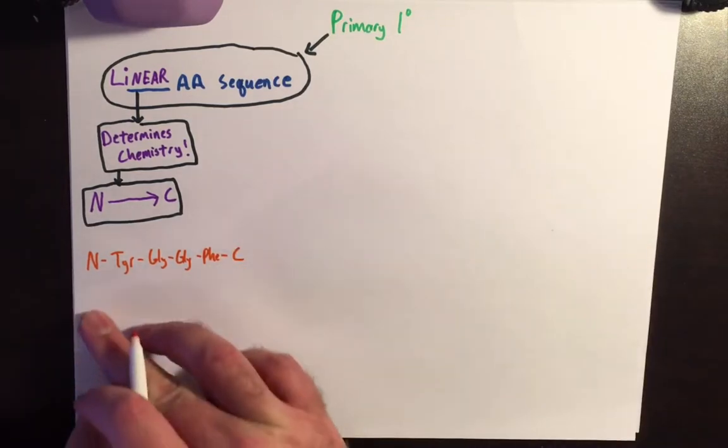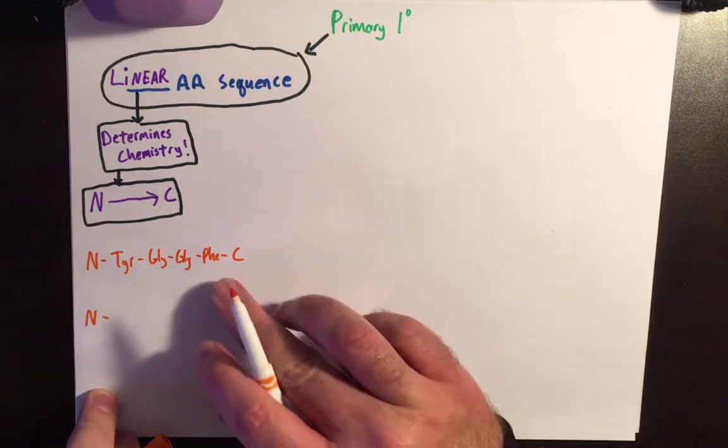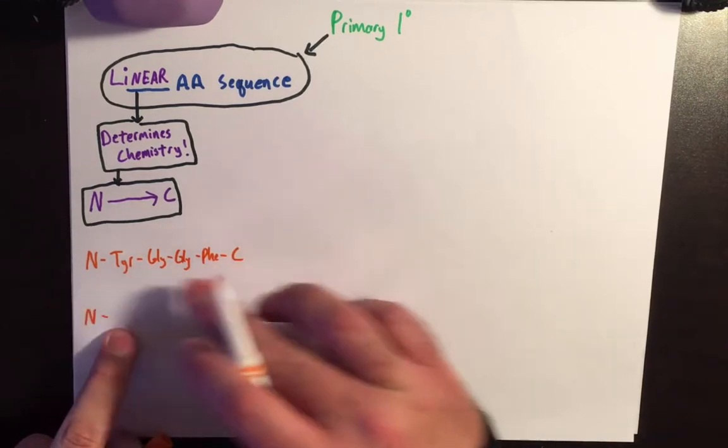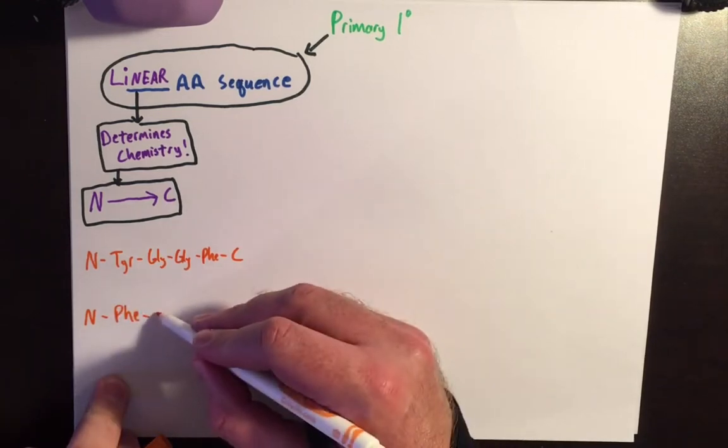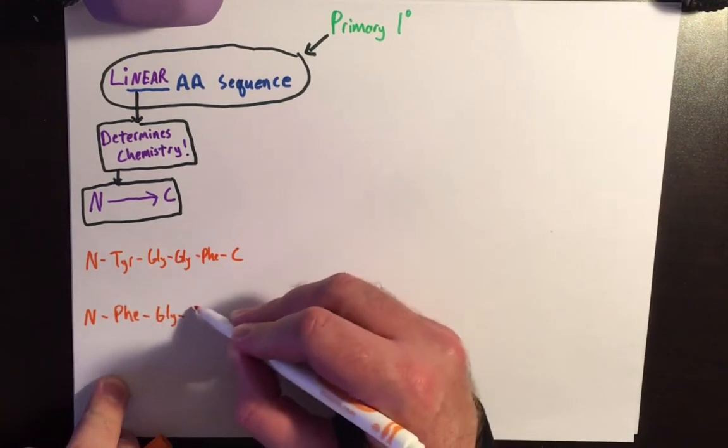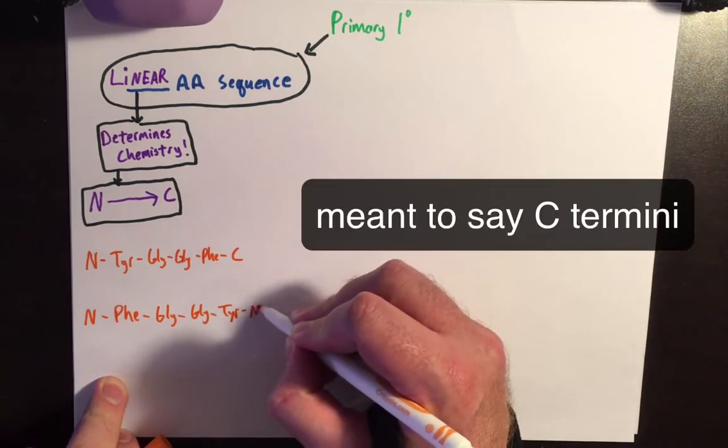And then let's just say that you had another protein that, starting with its N-terminus, was basically the same thing as this, but we're going in a different directionality, so we're going to start off with phenylalanine, followed by a glycine, glycine, and then another tyrosine, and then there's your N-terminus.